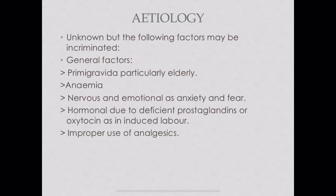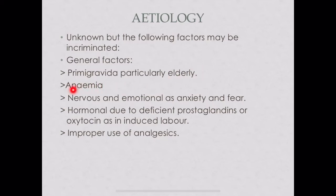Etiology of hypotonic uterine inertia is often unknown, but contributing general factors include: elderly primigravida — a woman over 30 who has never delivered before — who is prone to this condition; anemia; and nervous or emotional behavior such as anxiety and fear, referred to as psyche.